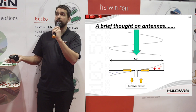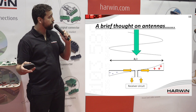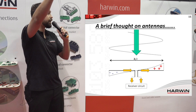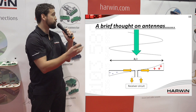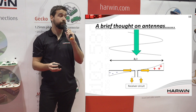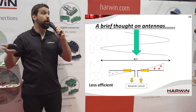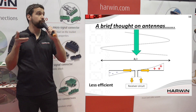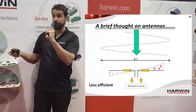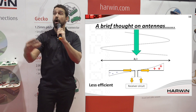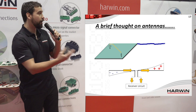A receiving circuit works on the same principle but in reverse: radiation gets received by a half-wavelength antenna and taken into a receiver circuit. The key thing to note is that if the antenna is not exactly the right half-wavelength, it just means it will be less efficient. This is a principle that is part of EMC.